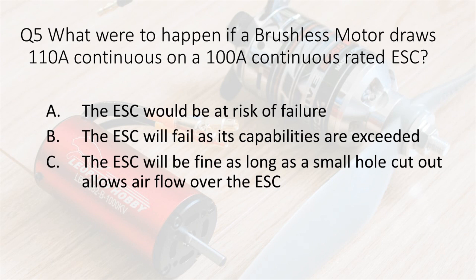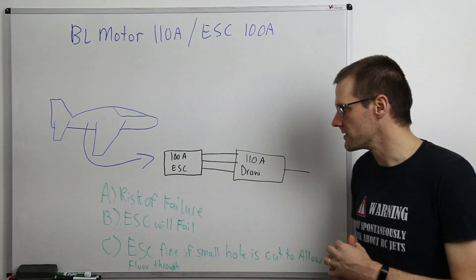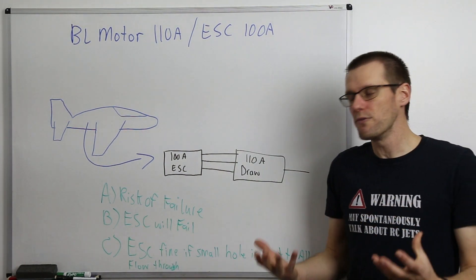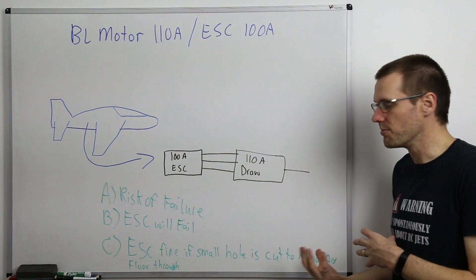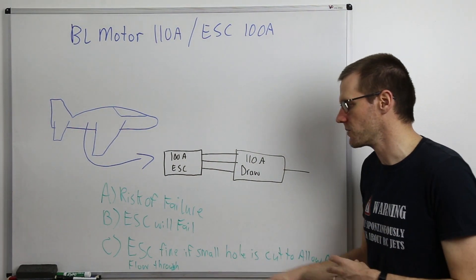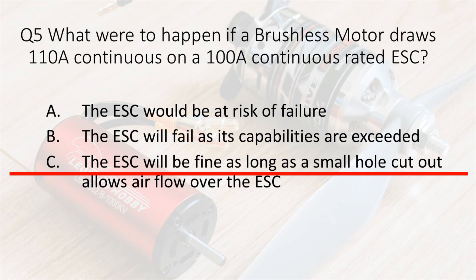Question number five: what would happen if you have a speed control that is rated at 100 amps of continuous current, but you're actually going to draw 110 amps continuously from that electronic speed control? Our answers are risk of failure, ESC will fail, or the ESC will be fine as long as you cut a small hole to allow for airflow. Let's start by eliminating the answer that doesn't make sense. That is C, the ESC will be fine. We don't know if it's going to be fine. A small hole could allow significant airflow if the speed is high, but if the speed is low, maybe it's not enough.